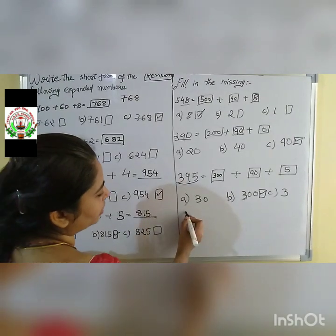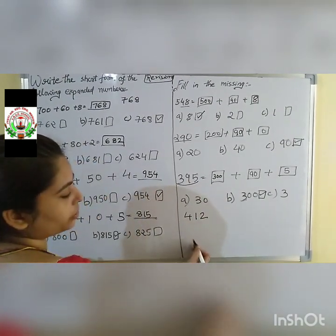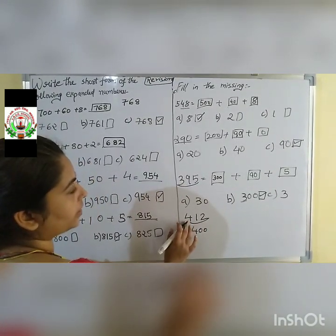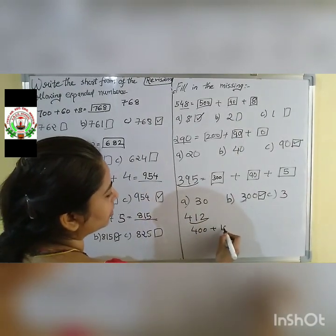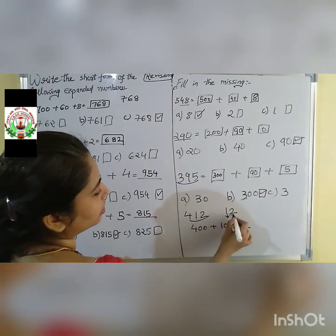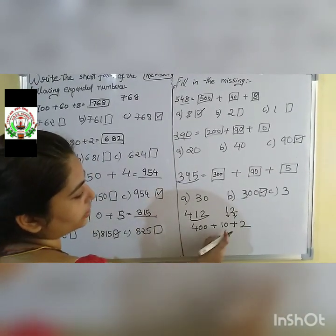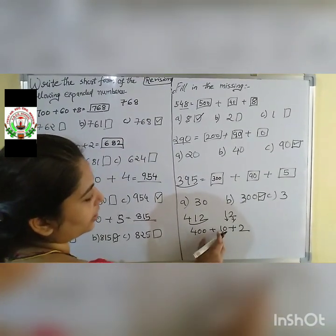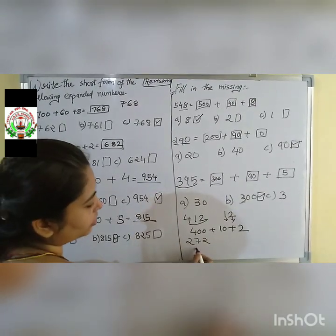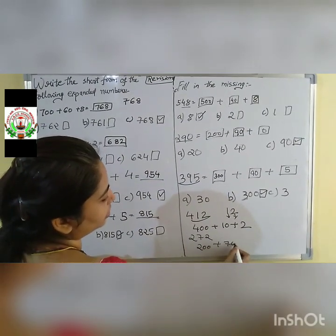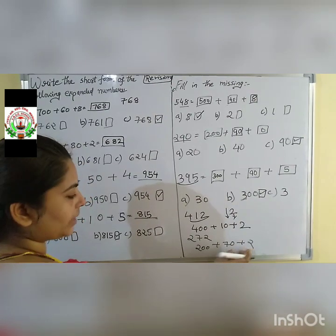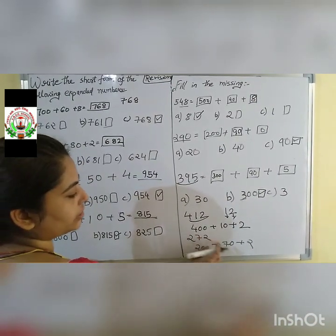One more example: 412 — that is 400 plus 10 plus 2. First write 400, then 10 plus 2. Another example: 272 — that is 200 plus 70 plus 2. Read the number properly and you will be able to write the expanded form. So 270 then 2.